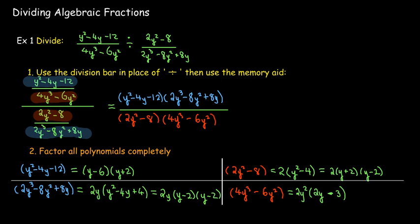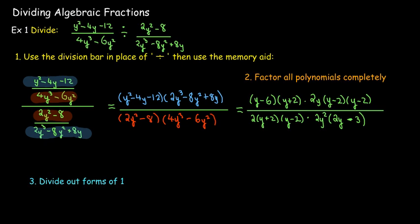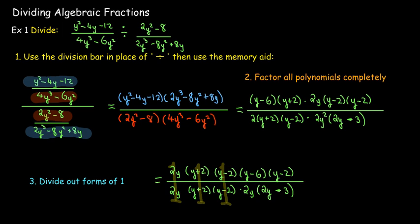And now, once we've got all of the factorizations, we are going to be looking for forms of 1. We'll divide those out. And what's left over is 1 times 1 times 1 times y minus 6 times y minus 2 on top. And on the bottom, I'll just have 1 times 1 times 1 times 2y, parentheses 2y minus 3. And I'll leave it there in factored form.